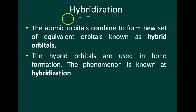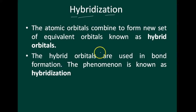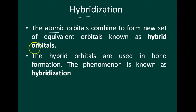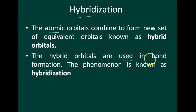The next concept is hybridization. The atomic orbitals combine to form a new set of equivalent orbitals known as hybrid orbitals. These hybrid orbitals are then used in bond formation — that phenomenon is known as hybridization.